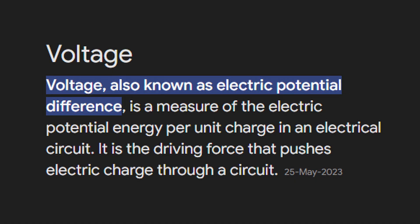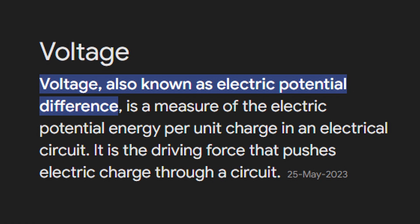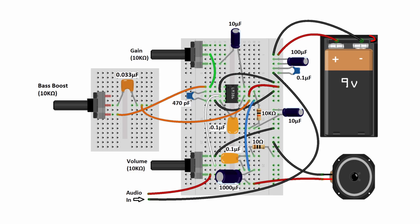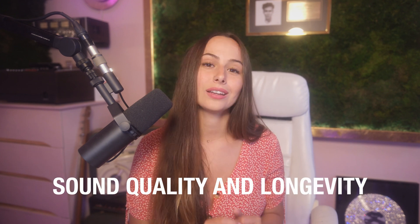First on the list is voltage. What is voltage? Voltage is the electrical potential difference between two points in a circuit, and it is measured in volts. It is the driving force that pushes the electric current through the circuit. In audio gear, voltage plays a critical role in powering amplifiers, which boost the audio signal to drive speakers and headphones. The voltage rating of your equipment will determine its compatibility with various power sources, as well as its overall performance. Ensuring that your audio gear operates within the recommended voltage range is essential for maintaining sound quality and longevity.